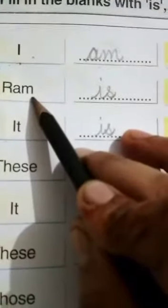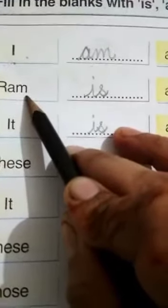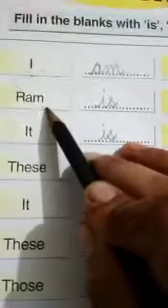Now see the first example is I dash a girl. So I is the only subject with which we use am. Next is Ram. Ram, a singular form, a singular person, always we use is. Ram is a boy.